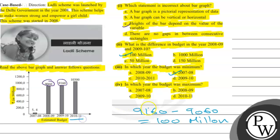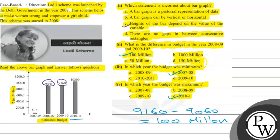The final answer is: for part three, option B is correct, and for part four, option B is correct. I hope you understood it well. All the best, thank you.